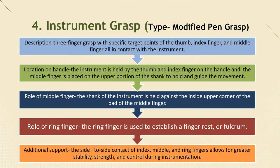Role of the ring finger: the ring finger is used to establish a finger rest or fulcrum. Additional support: the side-to-side contact of the index, middle, and ring fingers allows for greater stability, strength, and controlled ring instrumentation.